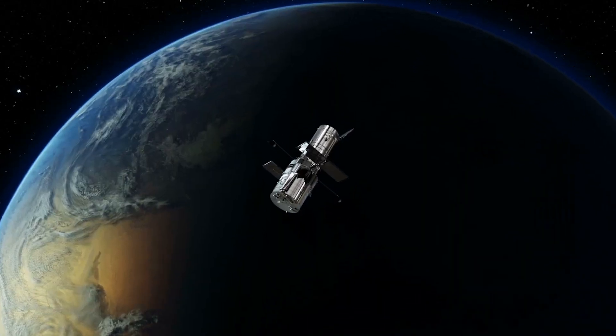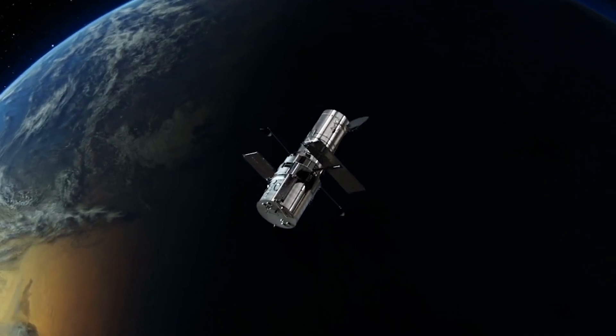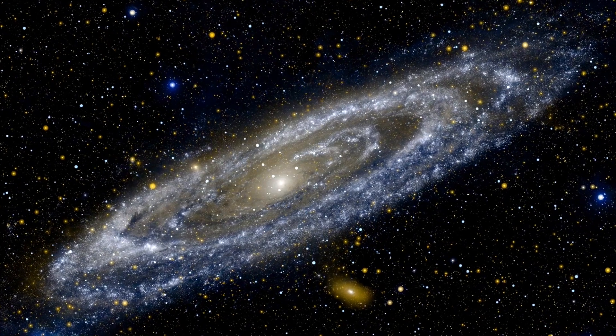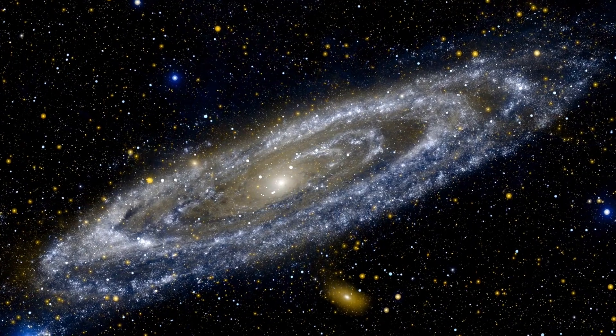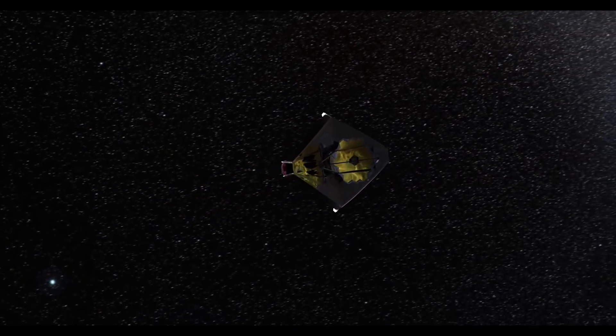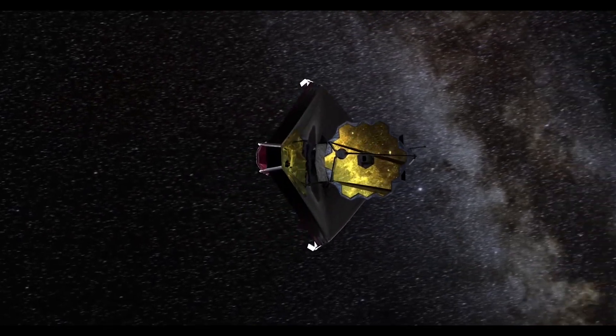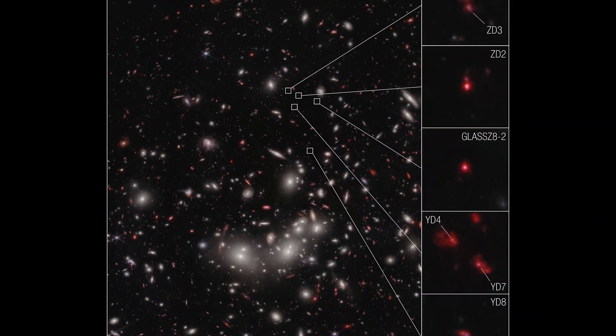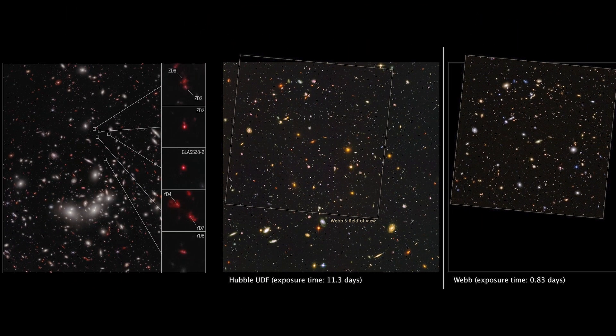Surprisingly, recent observations with the Hubble Space Telescope challenged previous notions about the early universe. Despite earlier beliefs that barred galaxies were rare in the early cosmos, the latest data from the Webb Telescope suggests a shift in our understanding. It appears that barred spiral galaxies may not have been confined to recent times in the universe's history.